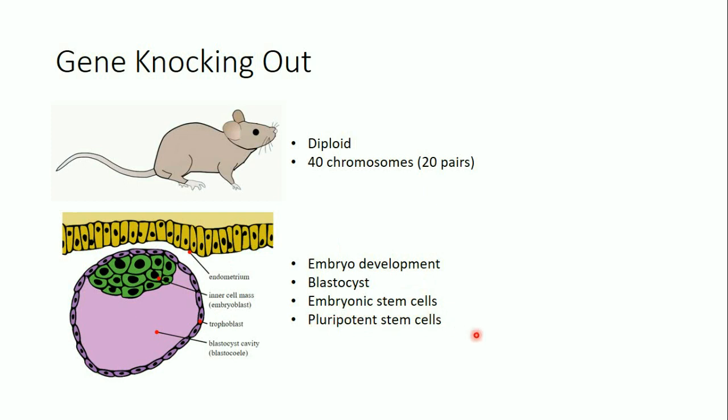The embryonic cells during embryo development are called embryonic stem cells, and they are pluripotent stem cells. First, they are very active cells because they are young and can proliferate actively. Second, they are pluripotent, meaning they are not yet differentiated and can be differentiated into any other type of cell in the body.